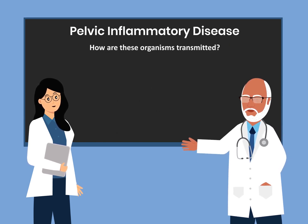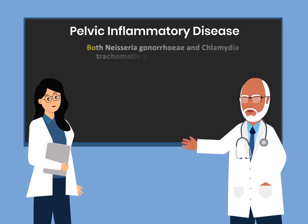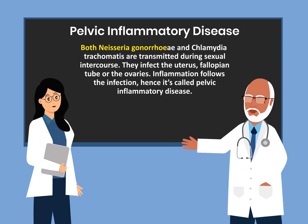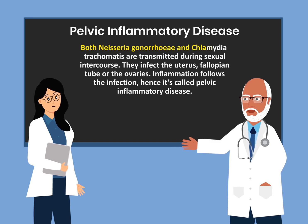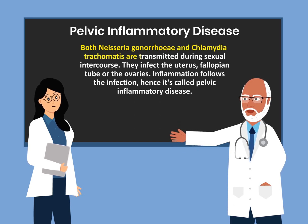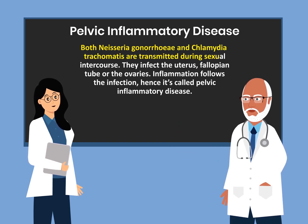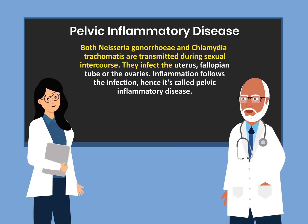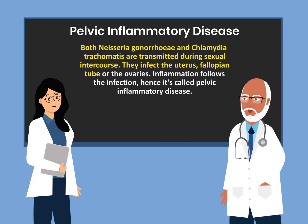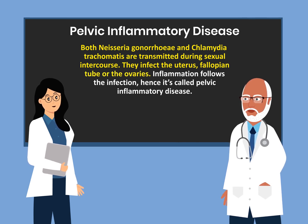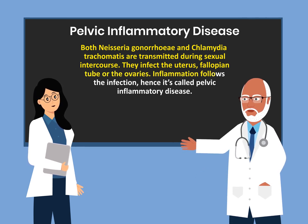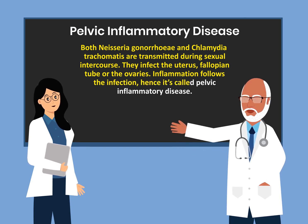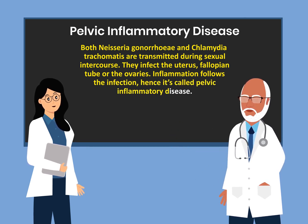How are these organisms transmitted? Both Neisseria gonorrhea and Chlamydia trachomatis are transmitted during sexual intercourse. They infect the uterus, fallopian tube, and the ovaries. Inflammation follows the infection. Hence, it is called Pelvic Inflammatory Disease.